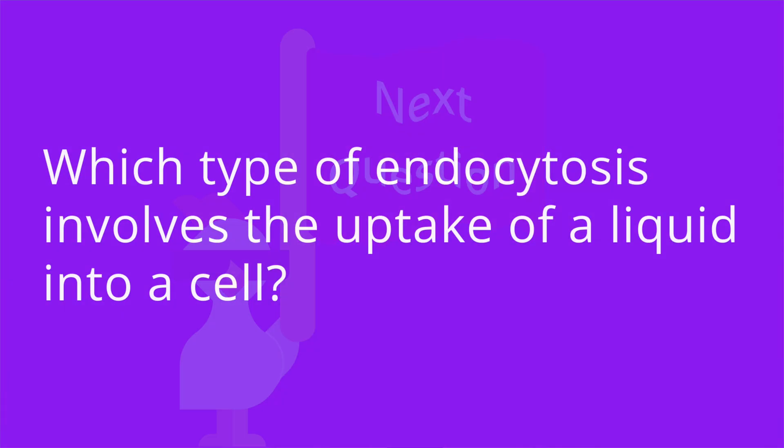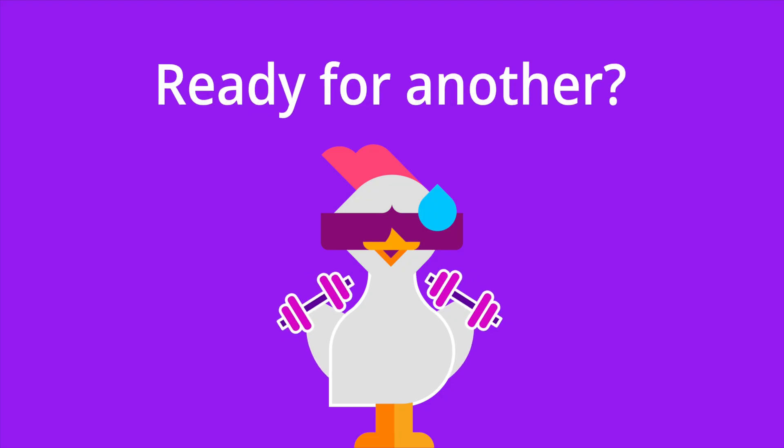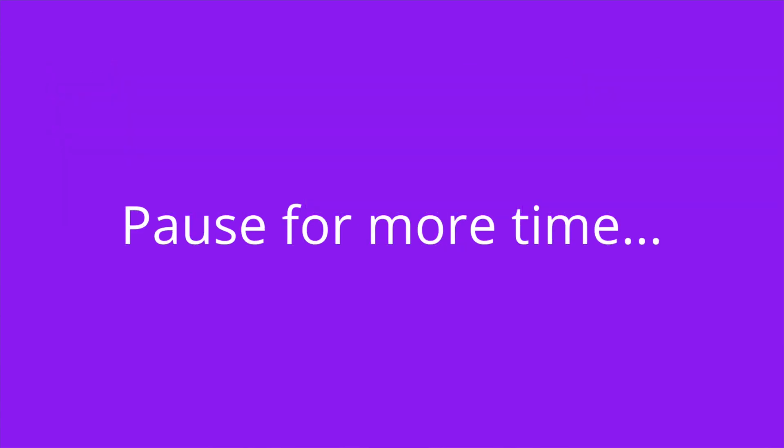Number two: which type of endocytosis involves the uptake of a liquid into a cell? The answer is pinocytosis. Number three: is the movement of molecules across a membrane from an area of low concentration to an area of high concentration a form of passive or active transport? The answer is active transport.